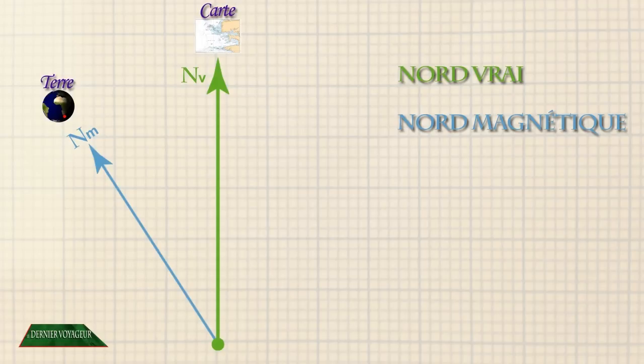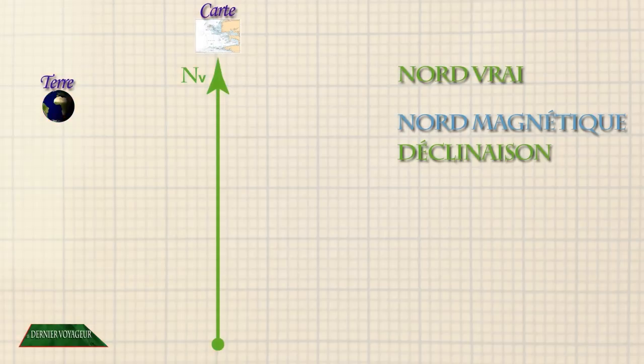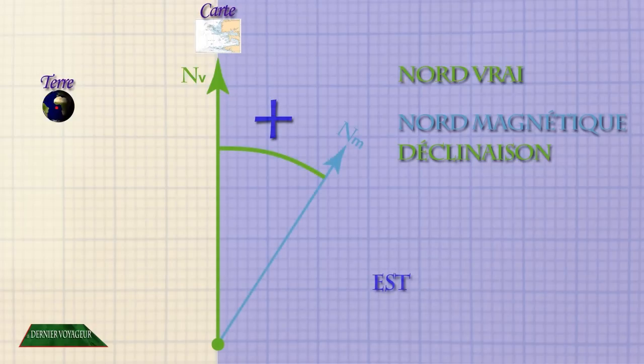L'écart entre le nord vrai et le nord magnétique s'appelle la déclinaison. Nous la notons grand D. La déclinaison est négative quand le nord magnétique est à l'ouest du nord vrai et positive quand le nord magnétique est à l'est du nord vrai.